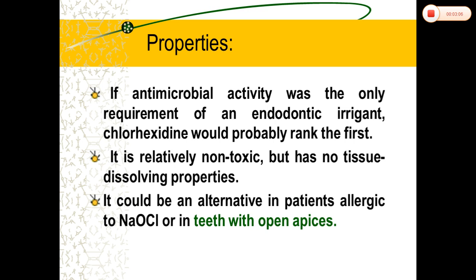Moreover, the leaching of PCA — para-chloro-aniline — from the insoluble precipitate can produce cytotoxic and carcinogenic reactions in humans and rats. Formation of the precipitate can be prevented by minimizing the chance for the two irrigants to come in contact with each other. A saline rinse must be used between the two. Batsrani et al. advocated that flushing out remaining hypochlorite with alcohol and EDTA is better before using chlorhexidine.